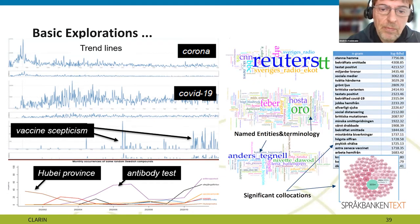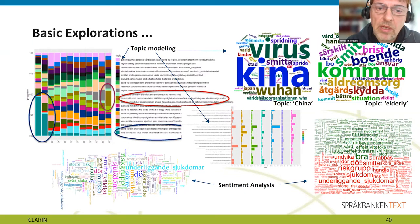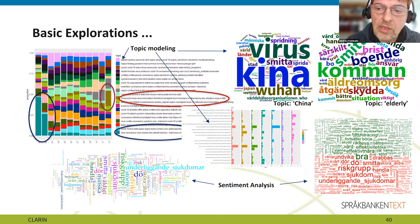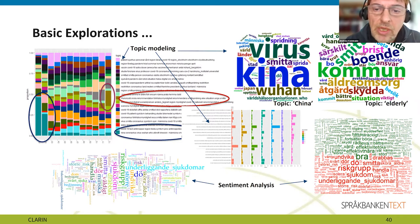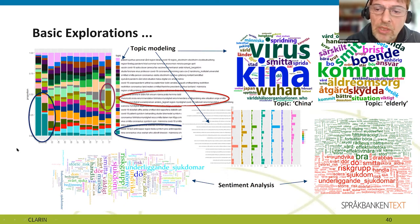The corpus can also be explored in more advanced ways. For example, we used topic modeling to identify topics and generate associated words, and investigated how topics are distributed across documents. We also applied sentiment analysis using available resources from Språkbanken Text — there are several sentiment lexicons that can classify the polarity of sentences, documents, or individual words as positive, negative, or neutral.